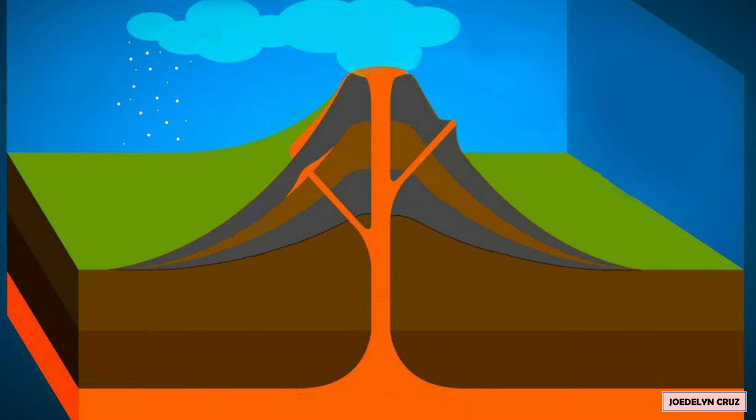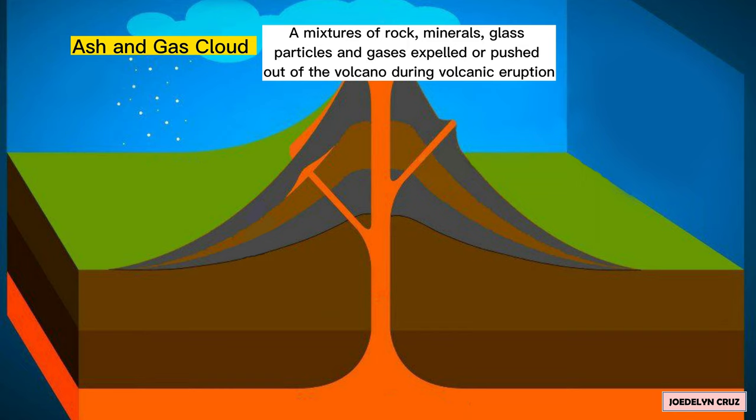Ash and gas cloud. Ash and gas cloud is a mixture of rock, minerals, glass particles, and gases expelled or pushed out of the volcano during volcanic eruption.